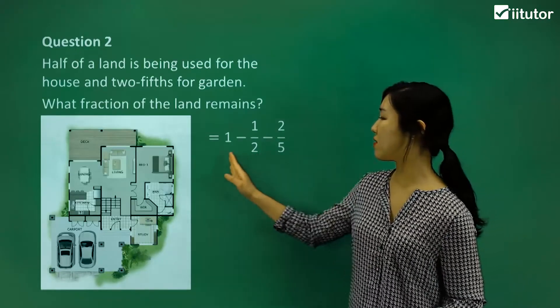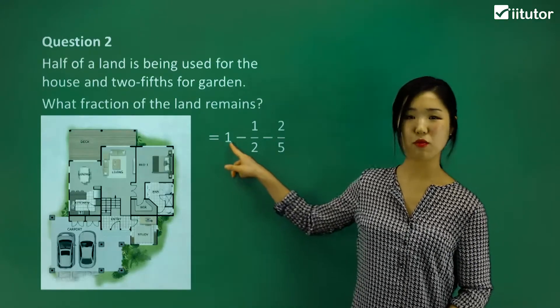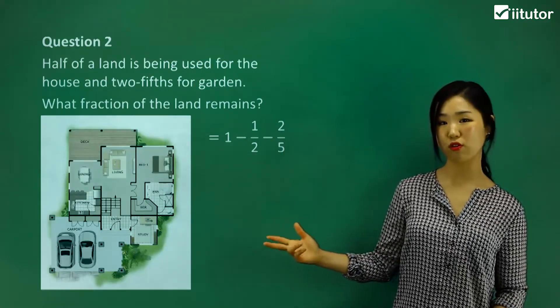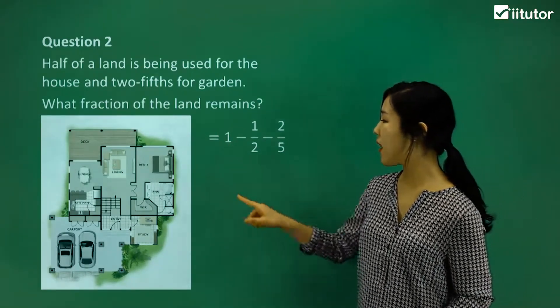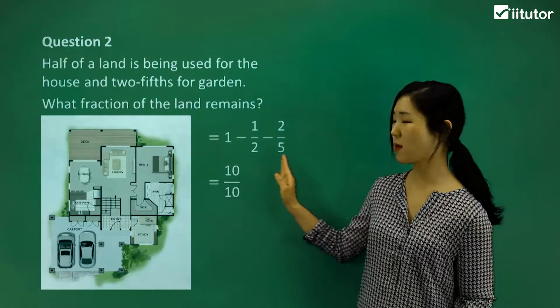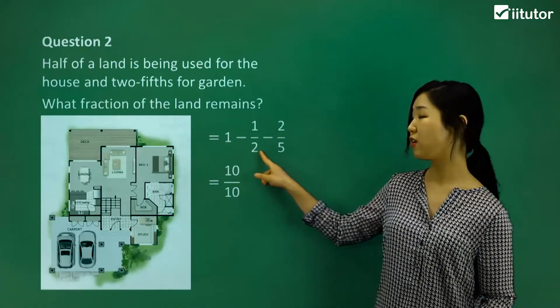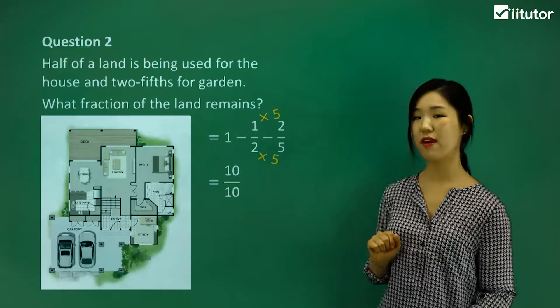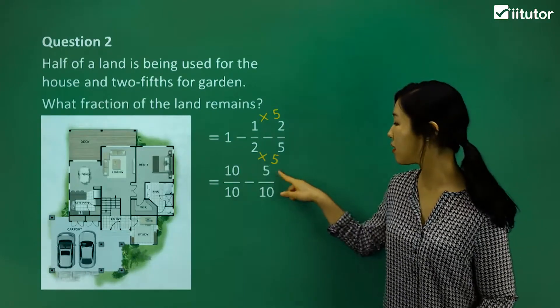In order to complete our subtraction of the fractions, we have to make a common denominator. At the moment, the denominators are all different, so we have to find the lowest common multiple. One is the same as one over one. One, two, and five - the lowest common multiple is 10. So I can make one into 10 out of 10. Now the half, I want to make 10. Two times what is 10? It's five. So I'm going to multiply top and bottom by five, and it becomes five over 10.